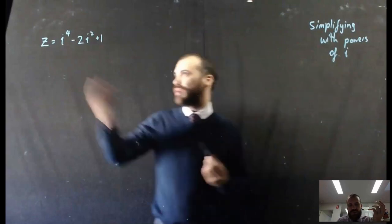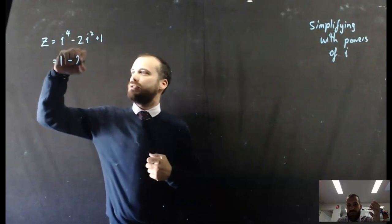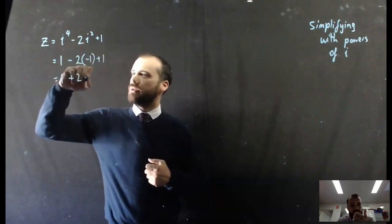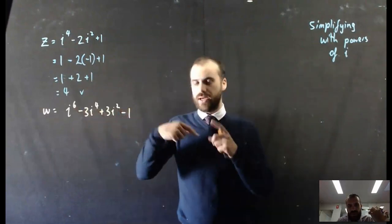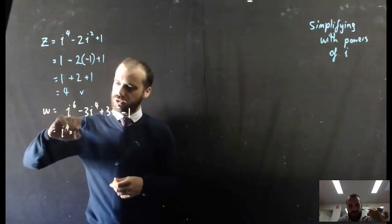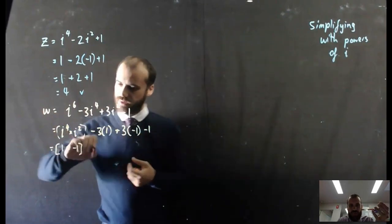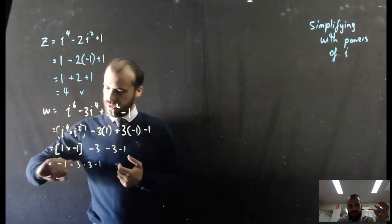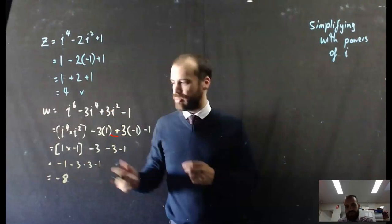Applying this in a couple of questions. z equals i to the 4 minus 2i squared plus 1. i to the 4 is 1, and 2i squared gives negative 1 — so just work through it from there. Another example: i to the 6 minus 3i to the 4 plus 3i squared minus 1. i to the 6 is i to the 4 times i squared, which is 1 times negative 1. i to the 4 is 1, so negative 3 times 1. i squared is negative 1, so 3 times negative 1. Then put it all together.